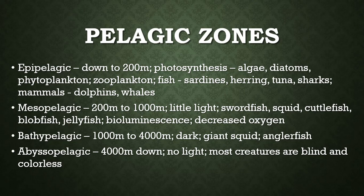Your middle layer is the mesopelagic — mezzo means middle — and it spans about 200 meters to 1,000 meters. There's very little light, not enough for real photosynthesis. This is where you find all the ones with bioluminescence, the little things that glow like fireflies: swordfish, squid, cuttlefish, everybody's favorite the blobfish, and a bunch of jellyfish. As we go down through the ocean we have less oxygen, which makes sense because we have less light, and fewer organisms can deal with that. A lot of the bioluminescent things will drift up into the epipelagic layer to eat during the night.